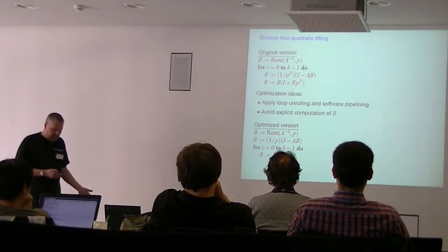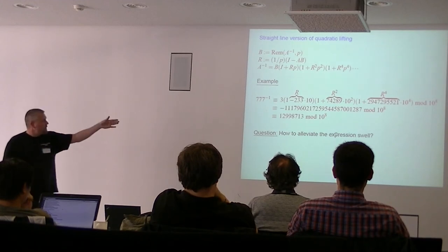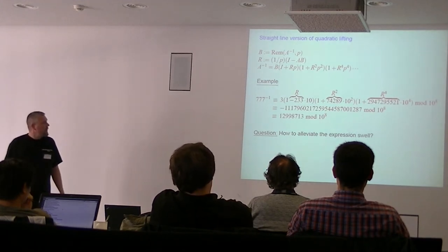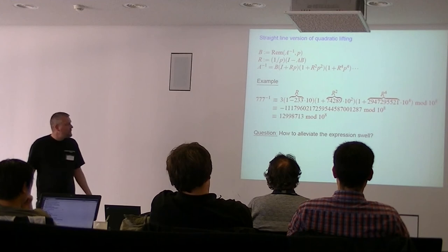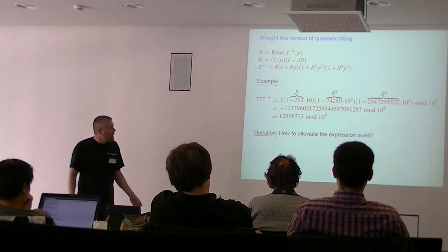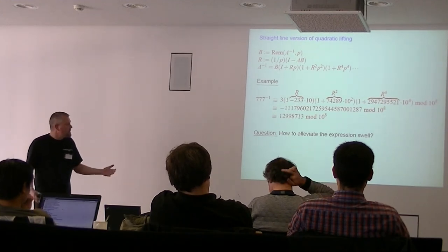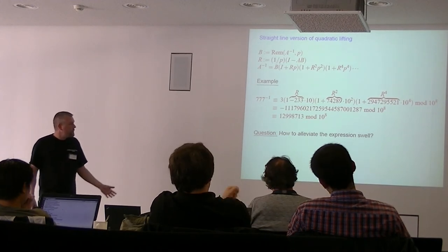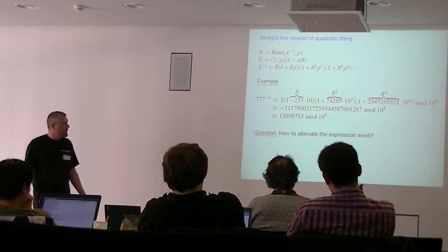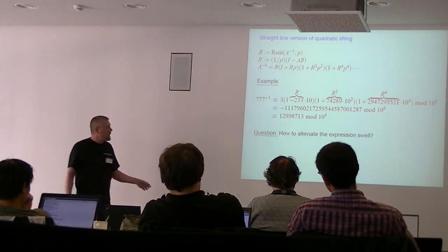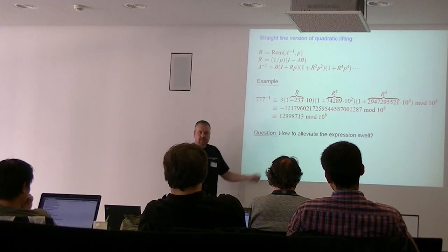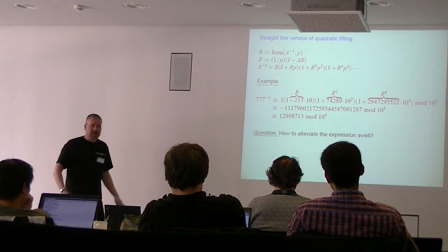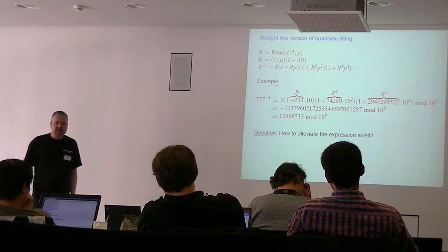Unfortunately there's a problem: we get the straight-line formula from the inverse, and this expression converges to the p-adic inverse of A. Here's an example with 777 inverse, showing R, R², R⁴. The expression is congruent to the inverse modulo 10⁸ after 3 lifting steps (2³ = 8). However, there's a large overflow — the actual inverse modulo 10⁸ is correct, but that expression is way too big. So how do we alleviate this? That's the idea of double-plus-one lifting.